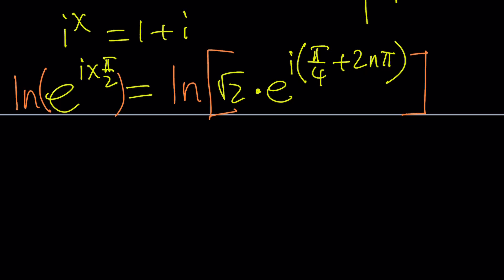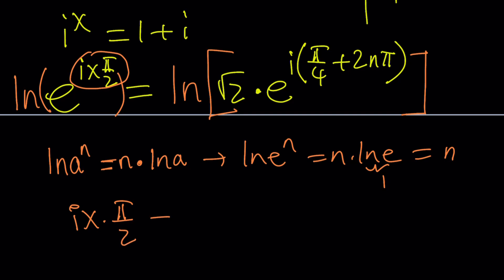Now, the power property tells us something. If you have ln a to the power n, you can write it as n times ln a. This can be proven by using the definition of logarithms. But when you have ln e to the power n, this becomes n times ln e and ln e is 1. So this becomes n. In other words, the answer is the exponent because we're ln and e. So it's going to be i x pi over 2 equals...